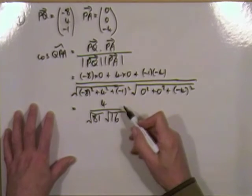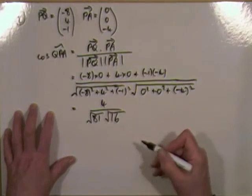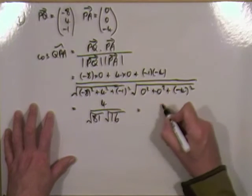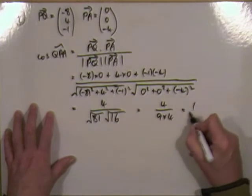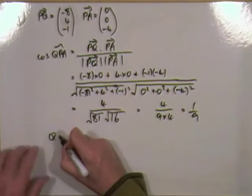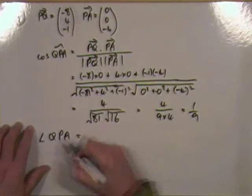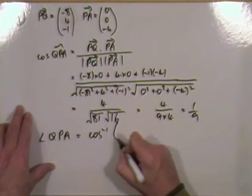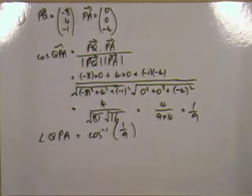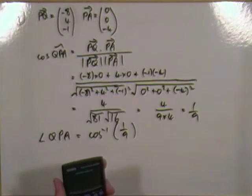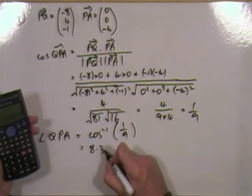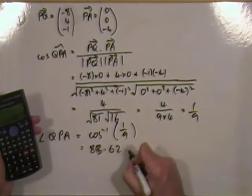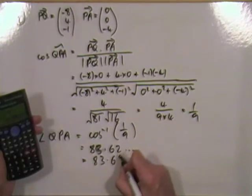Take the inverse cosine of that. So I've actually got 4 over 9 times 4, which cancels down to a ninth. Angle QPA is going to be the inverse cos of 1 ninth. Switching on the calculator and doing shift cos of 1 divided by 9 gives 83.62 degrees — just call that 83.6 degrees.